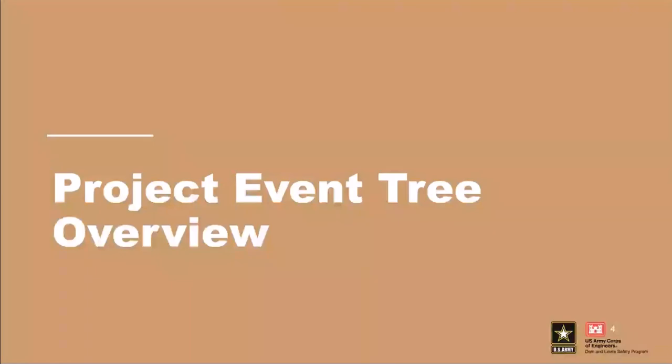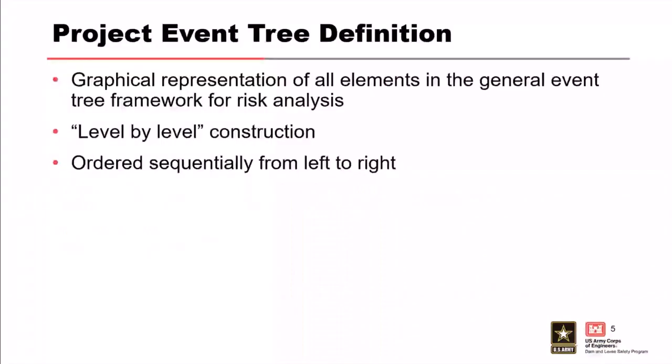First, an overview of project event trees. The project event tree is a graphical representation of all elements within the general event tree framework: hazard, system response, and consequences. It's constructed on a level-by-level basis with each level defining a new variable. The project event tree is ordered sequentially from left to right in an order of operations basis.